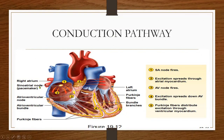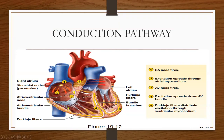Here again is another illustration of that conduction pathway, where you have in your right atrium the SA node — and your book talks about the inter-atrial tract and the inter-nodal tract right in here. Then that impulse goes down through the AV node, the bundle of His, and the Purkinje fibers, and out to the ventricles contracting and pushing blood out to the body.